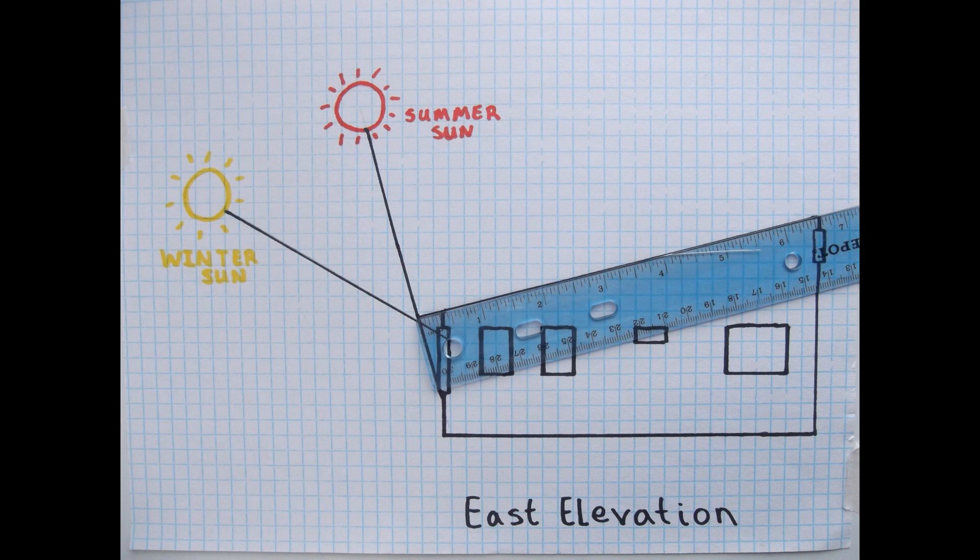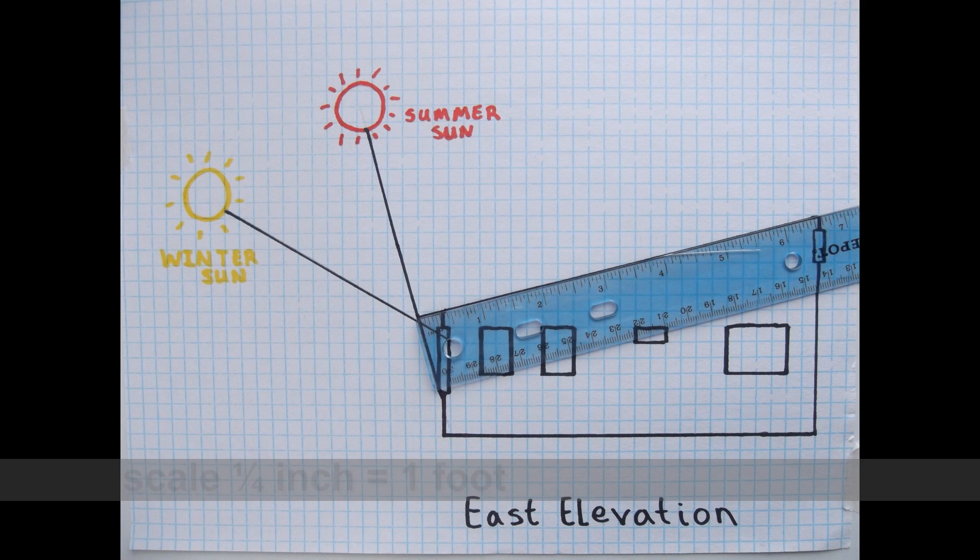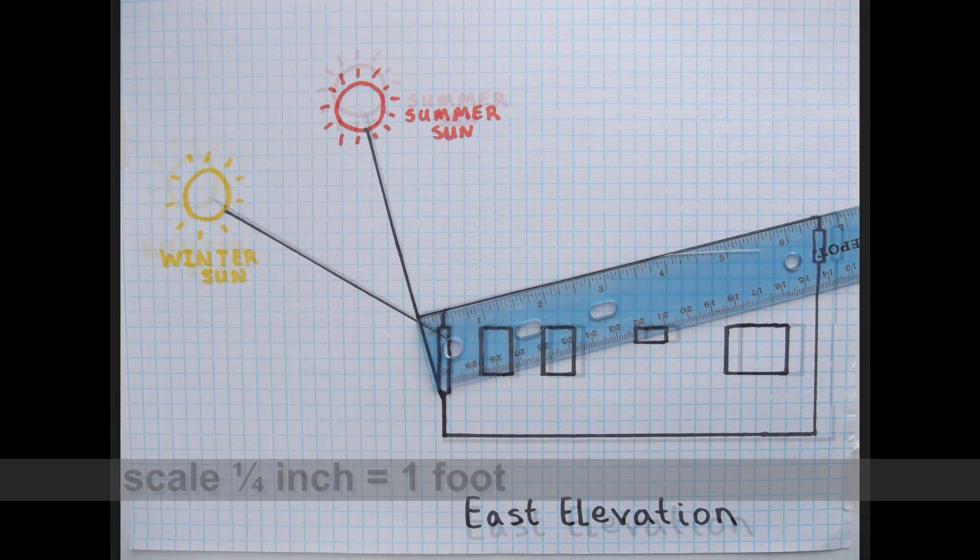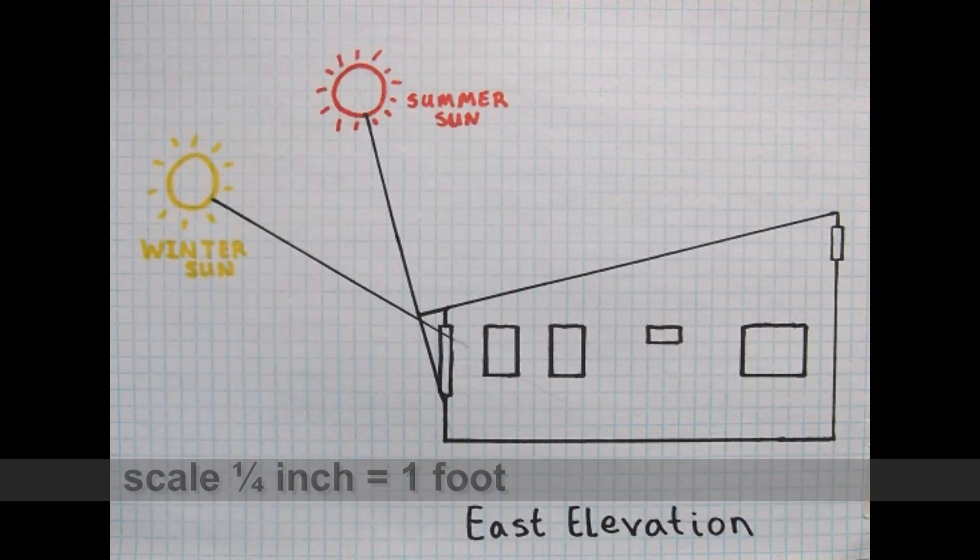To know exactly how long the overhang reaches, we can measure with our ruler and then use our scale to convert from inches to feet. Our overhang is 3 eighths of an inch long on our drawing. So when multiplied by our scale of 4 feet per inch, we get 1.5 feet.